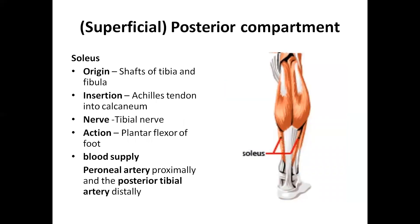The soleus originates from the posterior shaft of the tibia and fibula. The soleus is the origin, and we insert the Achilles tendon into the calcaneum. It is also supplied by the tibial nerve and its action is plantar flexion. Blood supply is from the peroneal artery and posterior tibial artery.